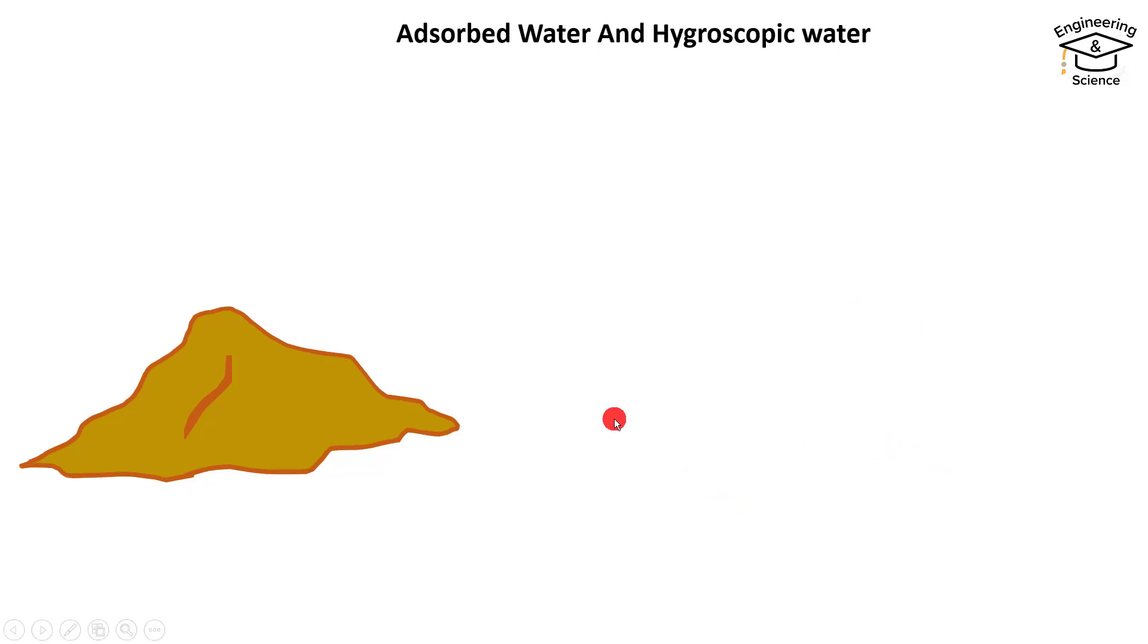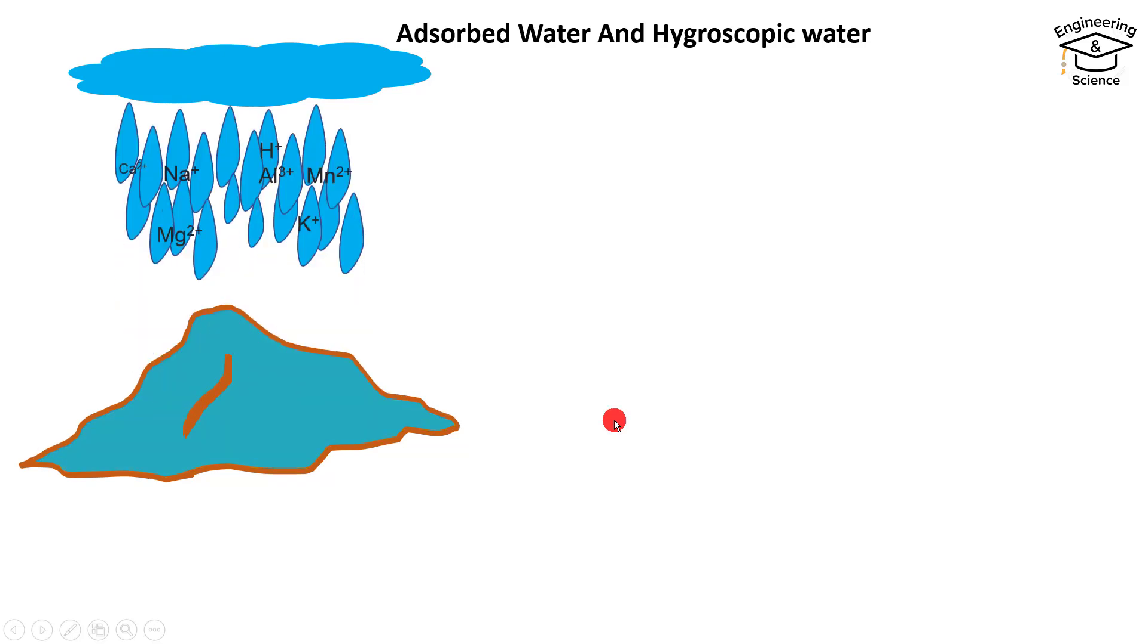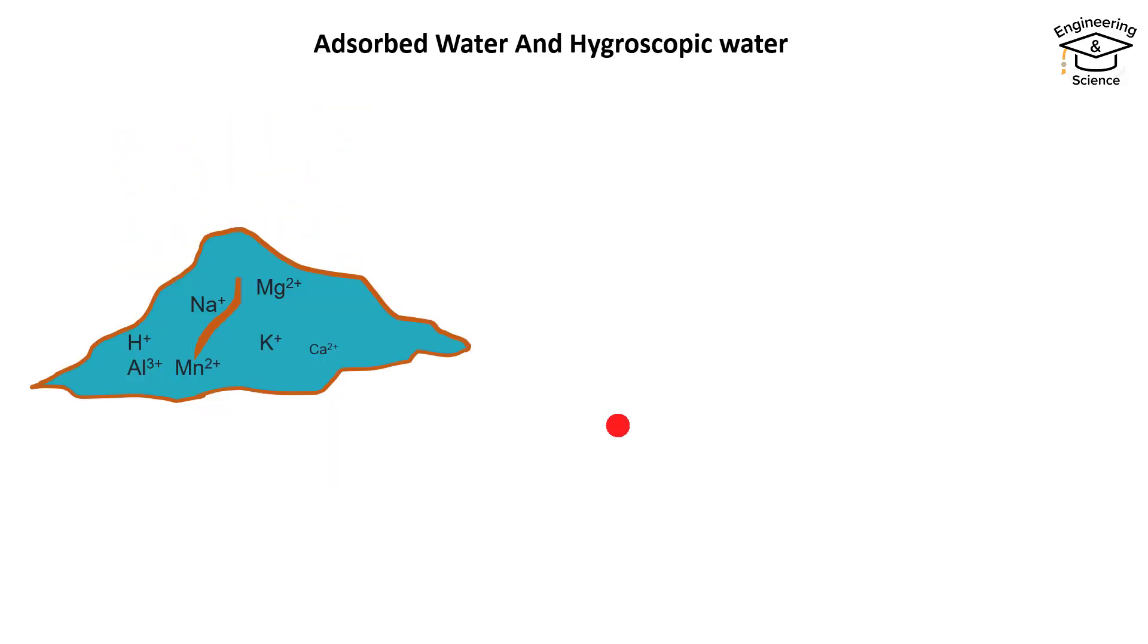For example, the soil sample gets wet by the rain and gets cations, or maybe wet by the river or by underground water movement. Now our sample got cations.